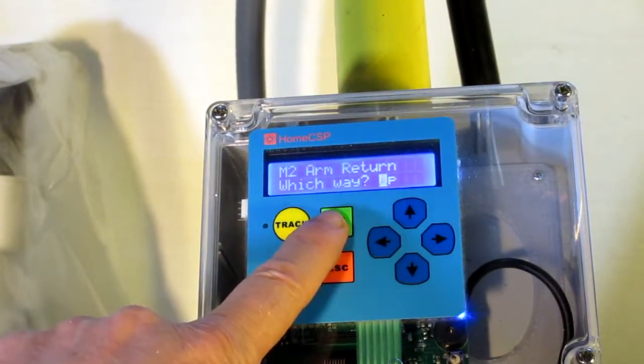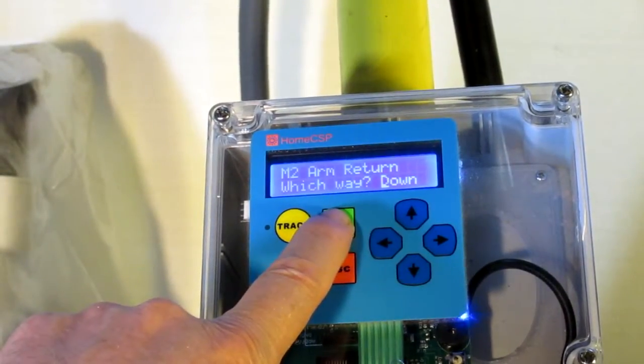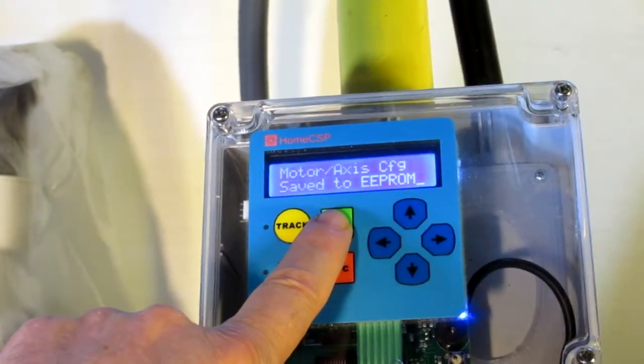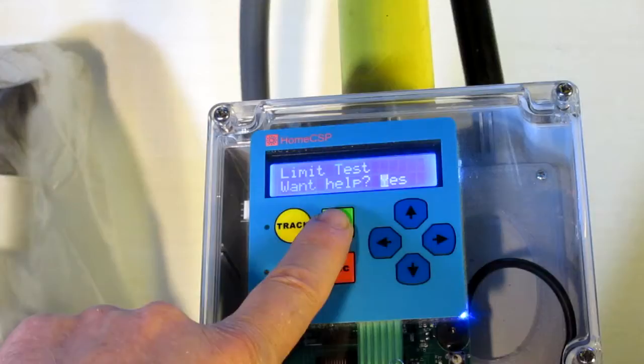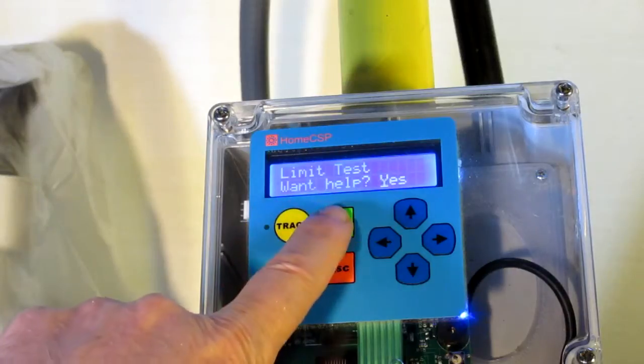When this retracts, it actually goes down. So on the first one, it was east or west. This one, it's up or down. Retract. And now we're ready for our limit test.